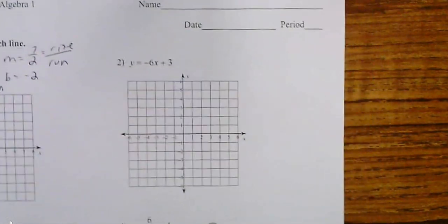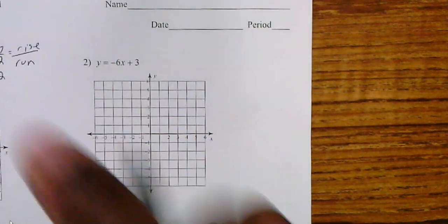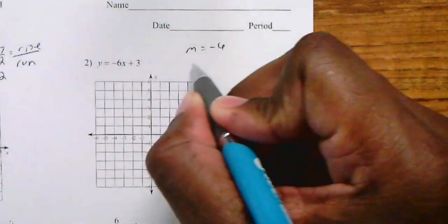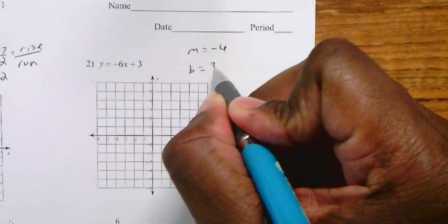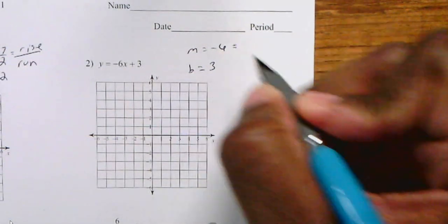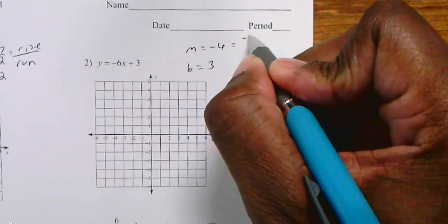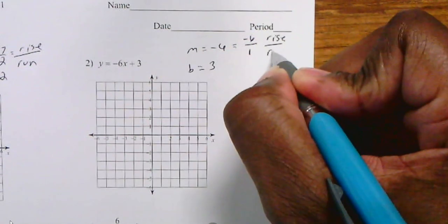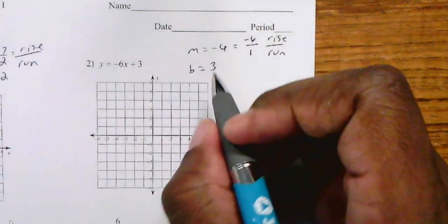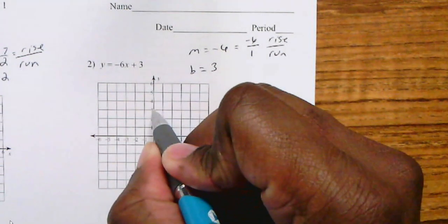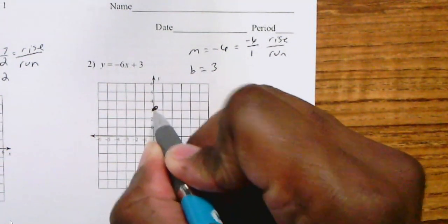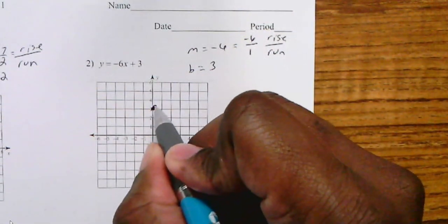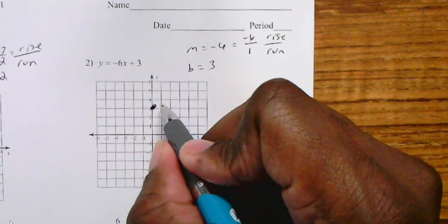The second one says y equals negative 6x plus 3, so my slope is negative 6 and my y-intercept is 3. We typically like our slope as a fraction, so since it's negative 6, we'll make it negative 6 over 1. That way I can easily see my rise and my run. My y-intercept is 3, so I go to the y-axis at 3.